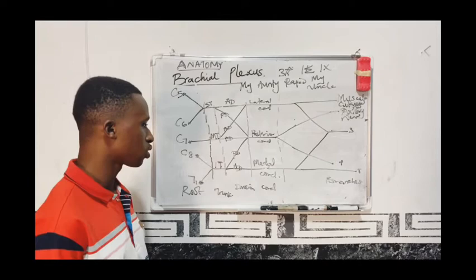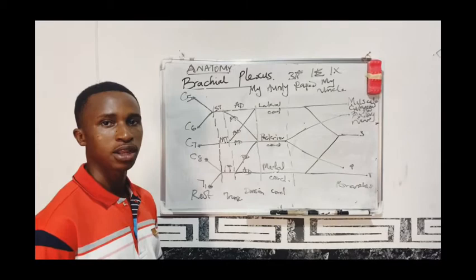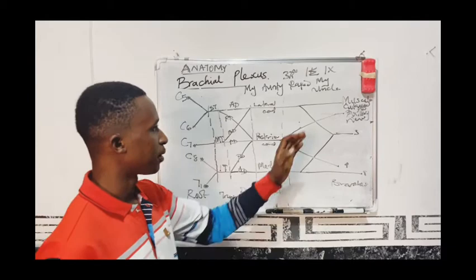Today we will be discussing the branches of the brachial plexus. The branches of the brachial plexus can be grouped into two: one, the terminal branches; and secondly, the side branches.